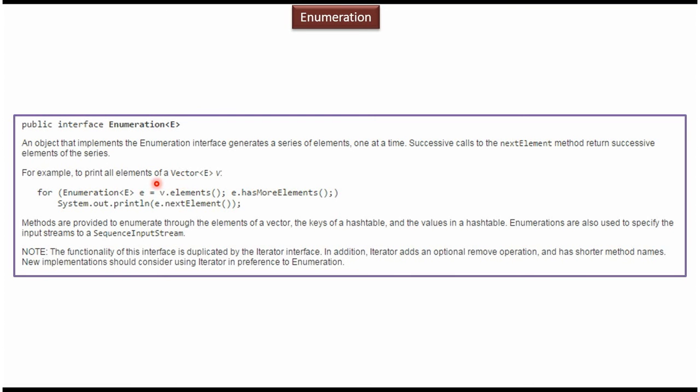Here you can see how to get each element from the vector. Vector has elements method. Using this method, we can get the enumeration. Once we get the enumeration, we can call hashMoreElements of enumeration to check whether vector has more elements or not. If it has more elements, then get each element one by one and display the output.